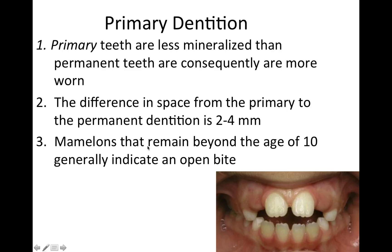Mamelons that typically remain beyond the age of 10 generally indicate an open bite. If you look at this picture, these are the mamelons here. Generally the teeth are occluding together when they protrude and go into lateral excursions — they grind together and these mamelons will get ground off. But if you still have them, it must mean that you have an open bite.